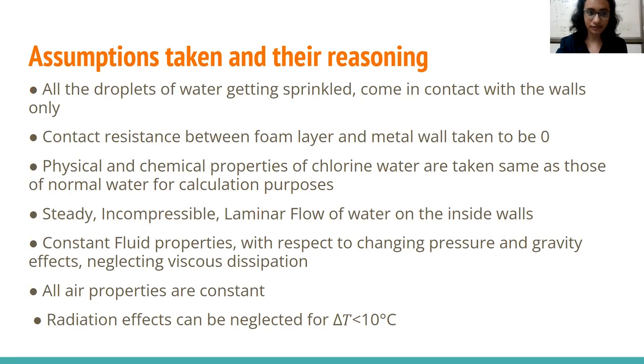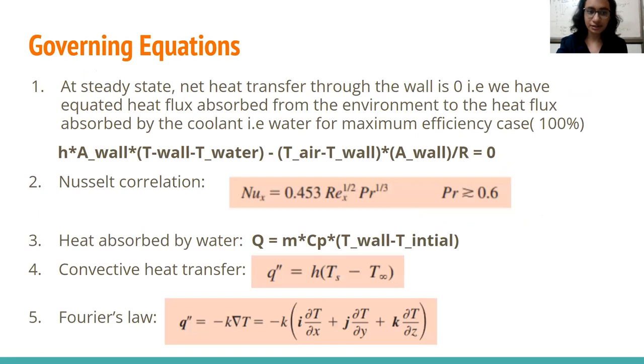These are some assumptions that we have taken and the reasoning for them as well. So we have taken contact resistance between foam layer and metal wall zero. We have taken laminar flow and the corresponding Nusselt correlation for it. We have taken constant fluid properties with respect to changing pressure and gravity effects neglecting viscous dissipation. All air properties are taken constant at a constant temperature. These are the governing equations that we have used. So we have equated the two heat fluxes, one of that the air gives to the surface and the one in which water takes away the heat from the surface and that is the first relation. Then we have taken the Nusselt correlation from the textbook for the laminar external flow of liquid. Then we have taken the heat absorbed by water to be mCp delta T and we have taken convective heat transfer equation.